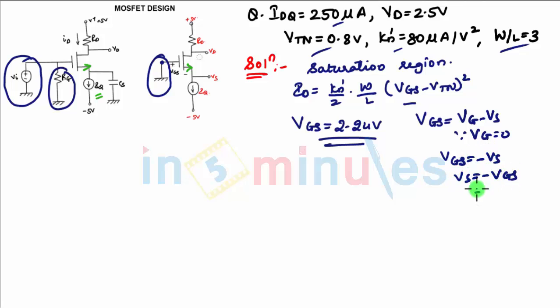We can get VS as minus 2.24 volts. Now when you apply KVL in this loop, the equation for KVL will be 5 minus ID times RD minus VD equals 0.